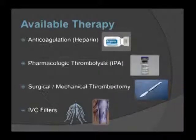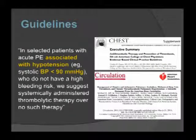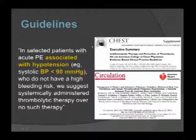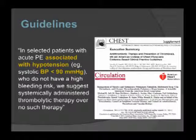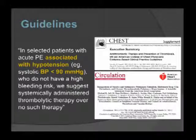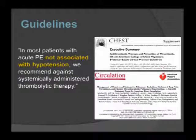To decide what to do for patients, we turn to guidelines from the American College of Chest Physicians and the American Heart Association. For patients with PE associated with hypotension — systolic BP under 90 — without high bleeding risk, systemically administered thrombolytic therapy is recommended over anticoagulation alone. For most hemodynamically stable patients, systemic thrombolytics are not recommended.